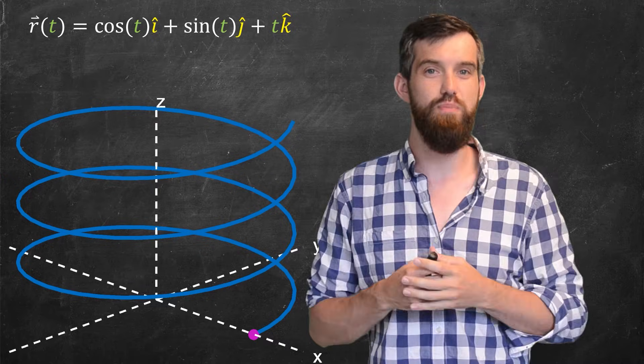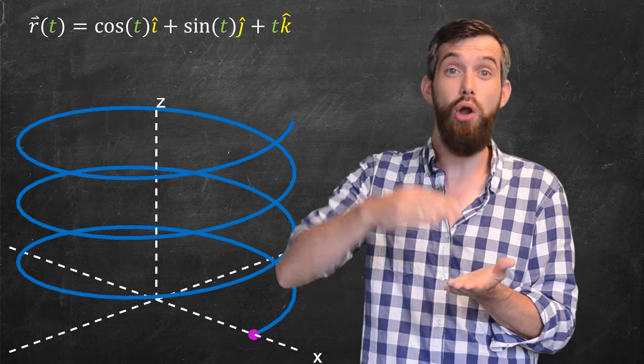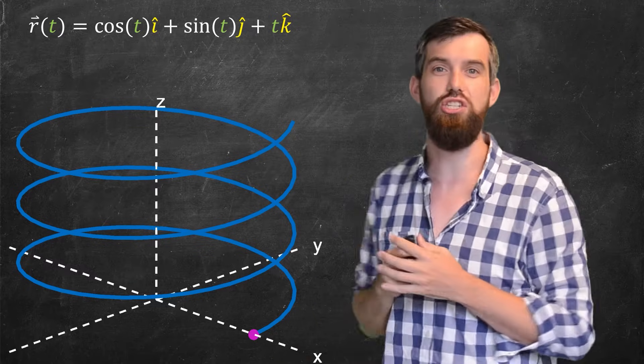Consider the z component, the k-hat direction. This is just multiplied by t, so as t gets larger, the z component gets bigger and bigger and bigger, which makes sense as my helix just rises.